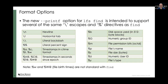We also have things like disk space in 512-byte blocks, numeric user ID, numeric group ID, file permissions, file name, etc. The one thing that isn't standard with normal find is that in order to print the birth time, we've used a percent w. And that's sort of a convention that we chose.